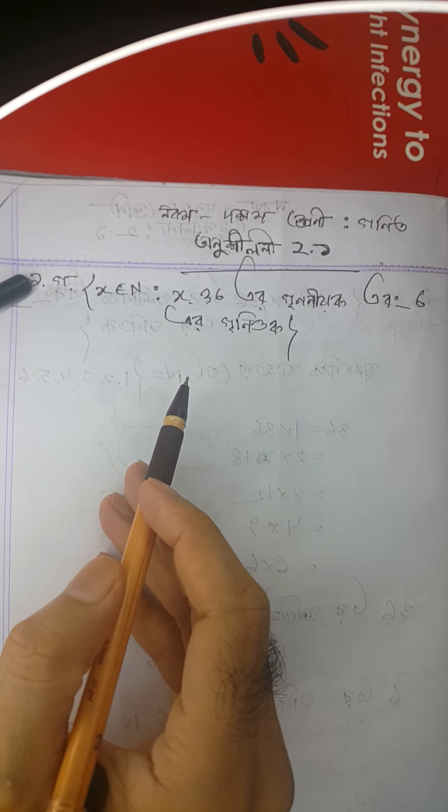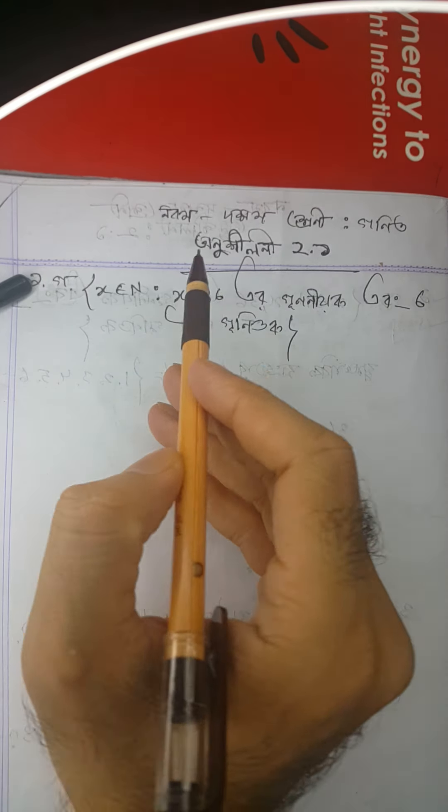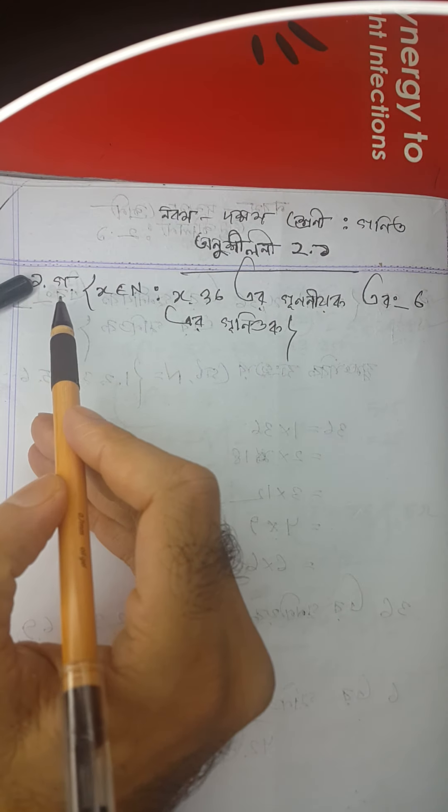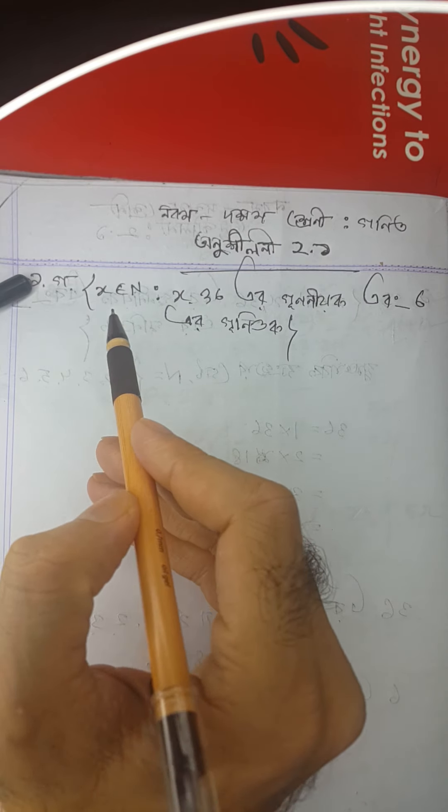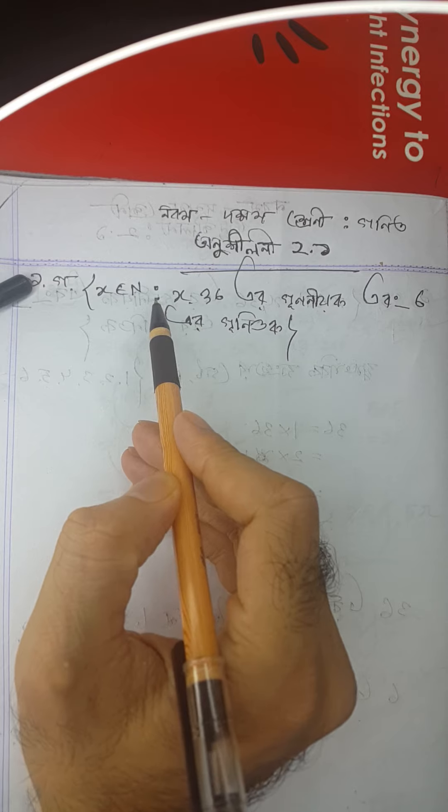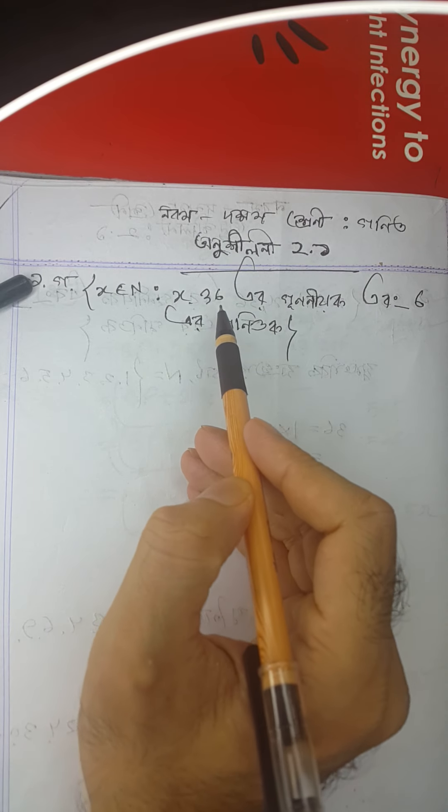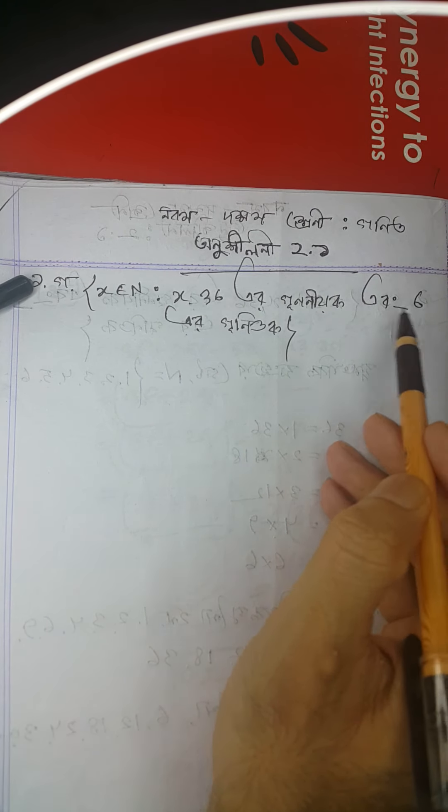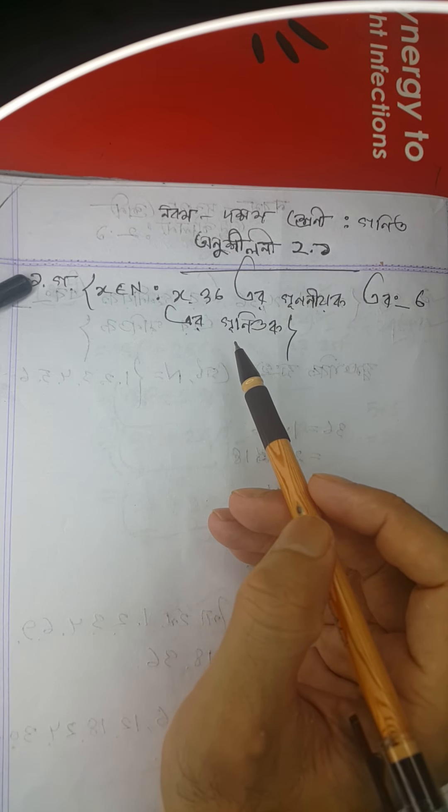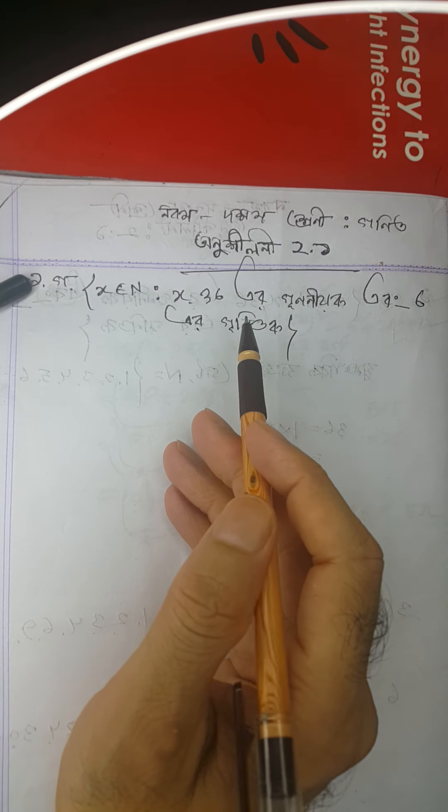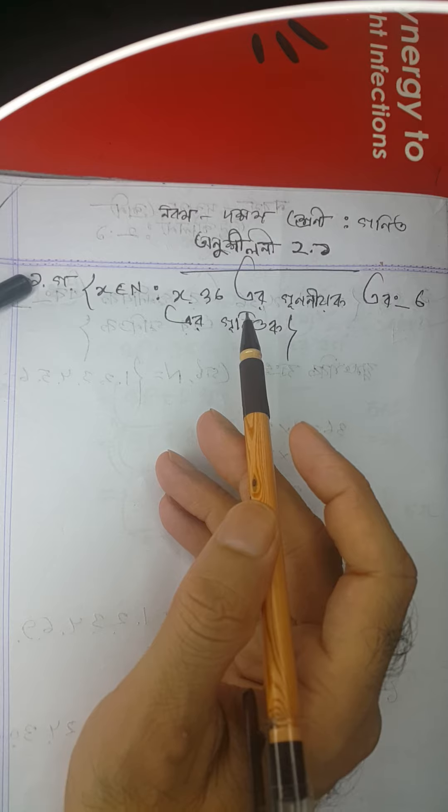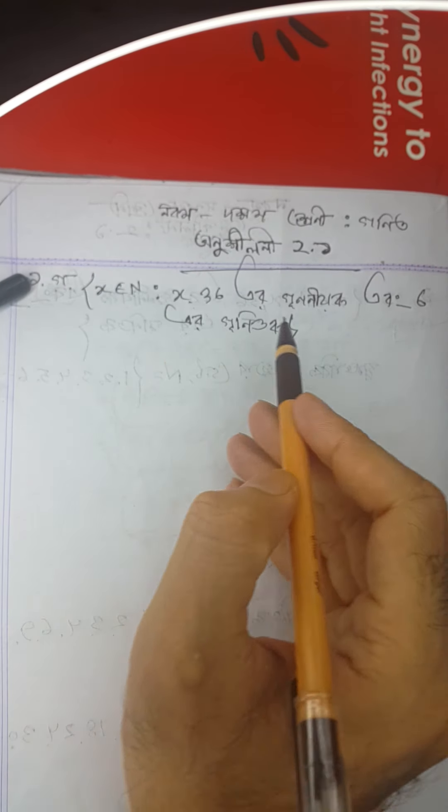Assalamualaikum, welcome to another math tutorial. Today we're solving a problem: X belongs to a set where X comma 36, and we need to find elements where X is a factor of 36 and also a multiple of 6. Before we start, if you haven't subscribed to our channel, please subscribe.